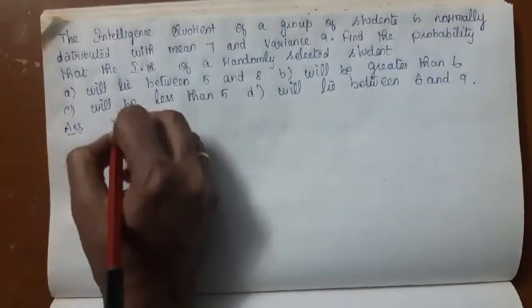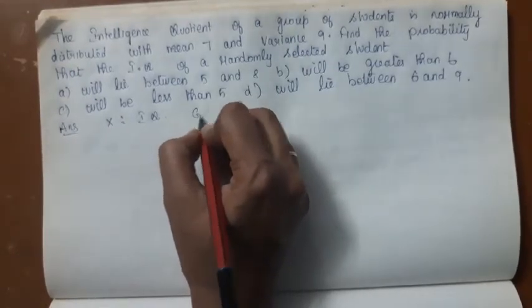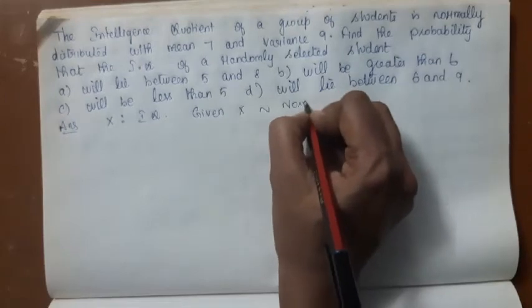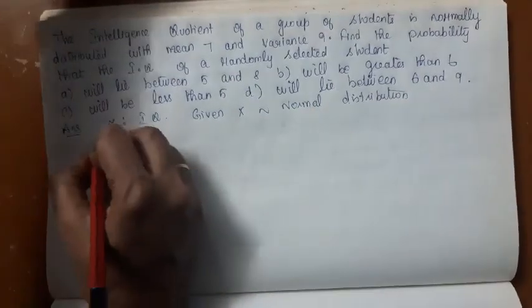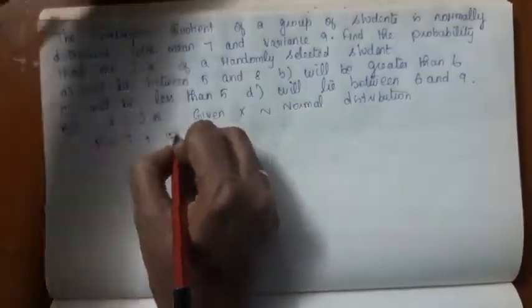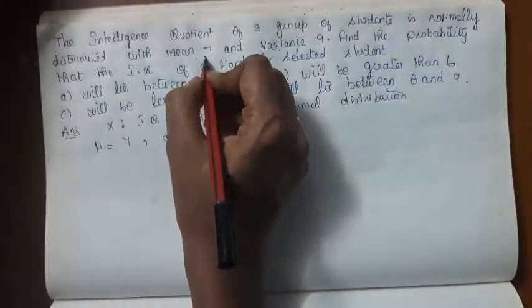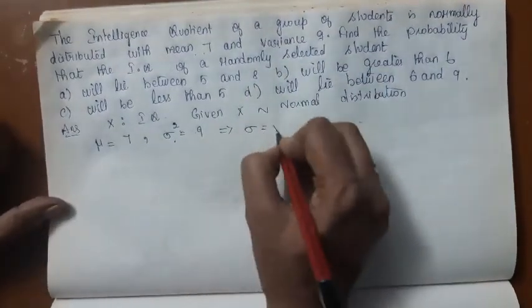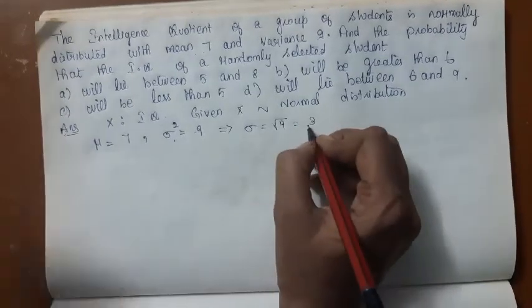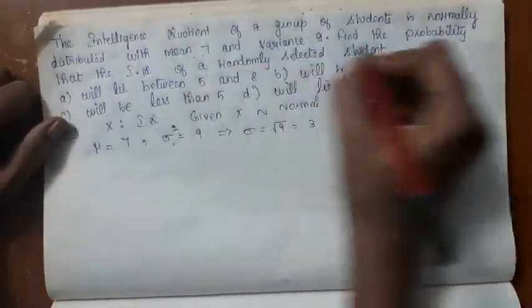So what is given? Let us represent the intelligence quotient as X. And it is given that X follows normal distribution. The mean is known to be 7 and variance is given as 9. If variance is 9, your standard deviation takes square root of 9, it is 3. It cannot be minus 3. Standard deviation cannot be a negative value. With this understanding, let us come to the question.